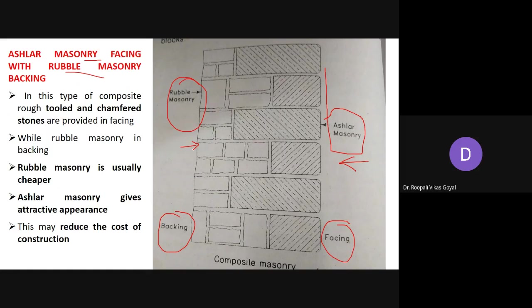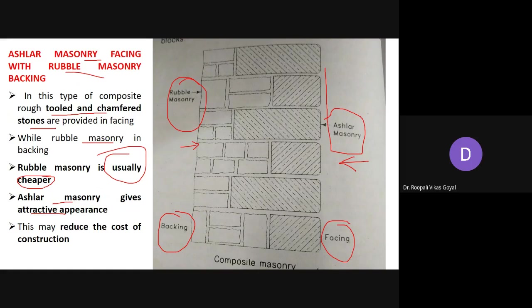In this type of composite masonry, rough tooled and chamfered stones are provided on the facing side and rubble masonry on the back side. Rubble masonry is usually cheaper compared to ashlar masonry, so this brings an attractive appearance on the front side while reducing the overall cost of construction. You get the economy of rubble masonry and the good appearance of ashlar masonry by combining both front side and back side.